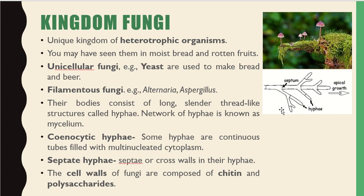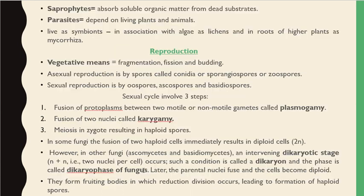Some hyphae are continuous tubes filled with multi-nucleated cytoplasm, called coenocytic, and some hyphae are septate, meaning they have septa or cross walls. The cell wall of fungi is composed of chitin and polysaccharides. Fungi are saprophytes that absorb soluble organic material from dead substrates, or they may be parasites depending on living plants and animals. They also live as symbionts in association with algae as lichen and in roots of higher plants as mycorrhiza.